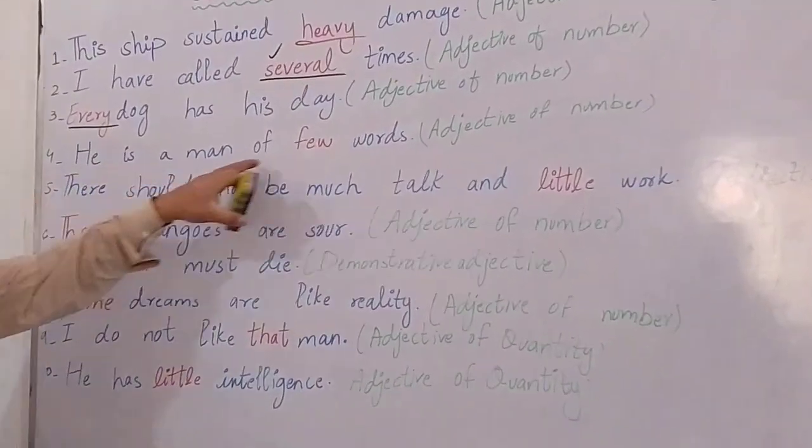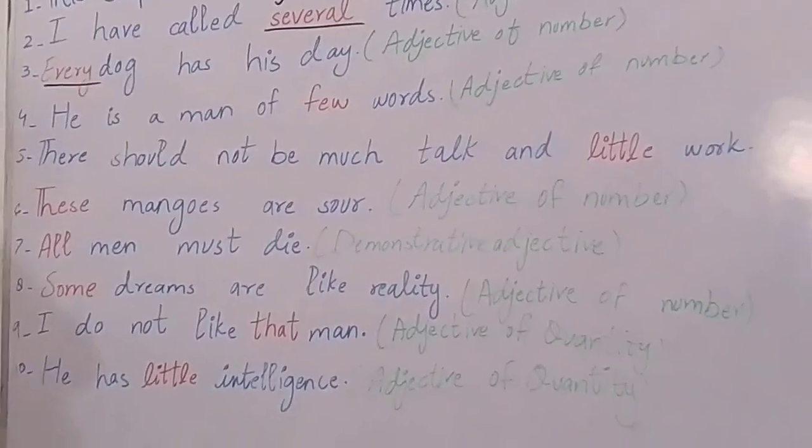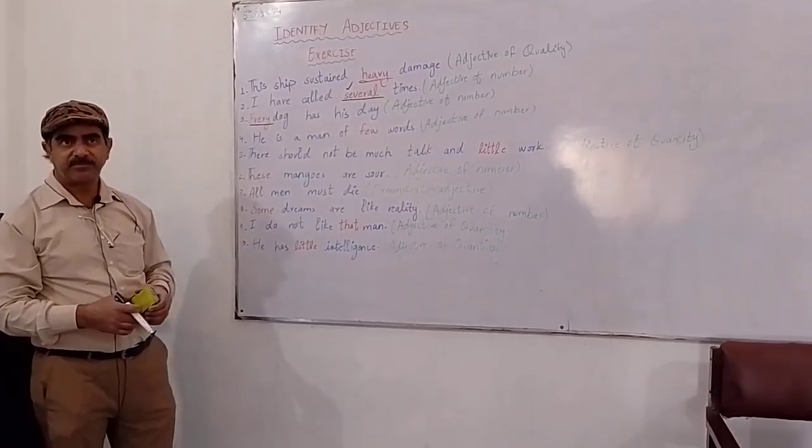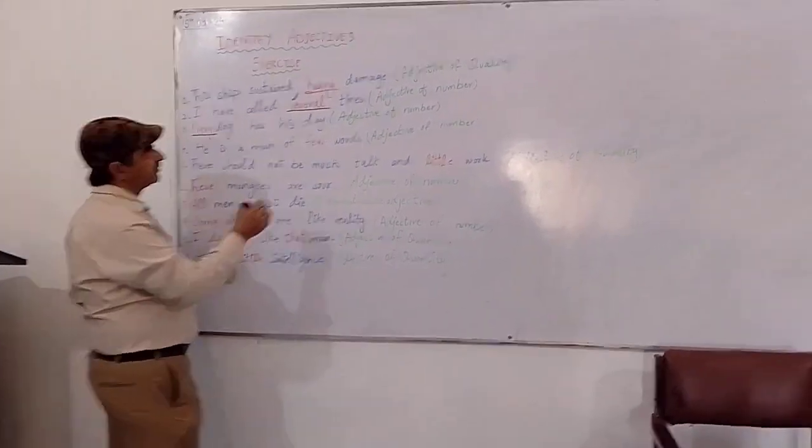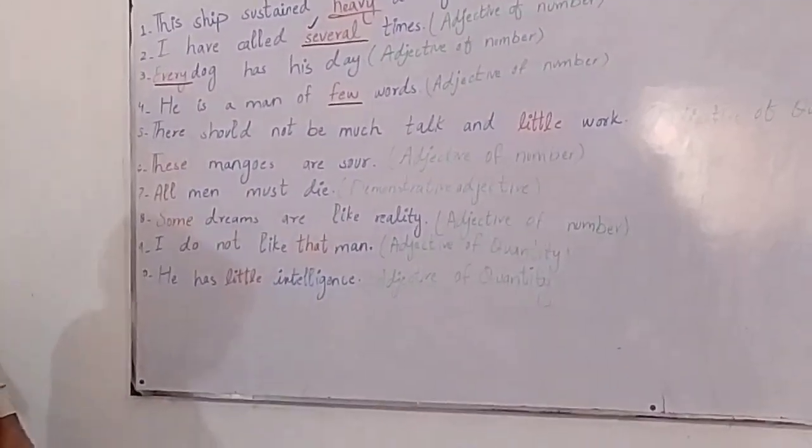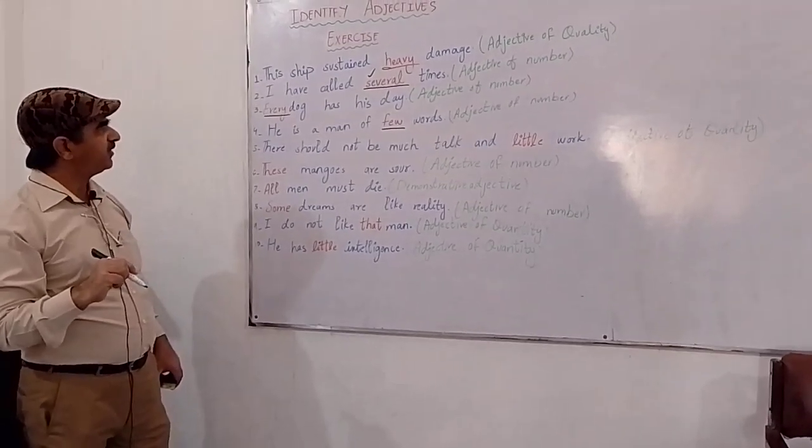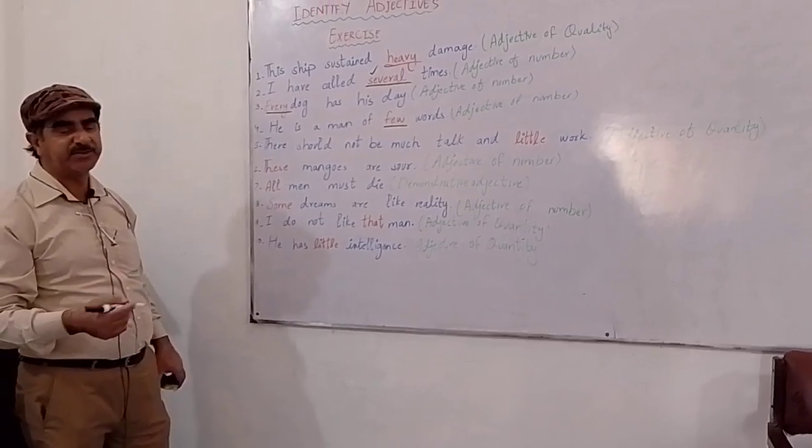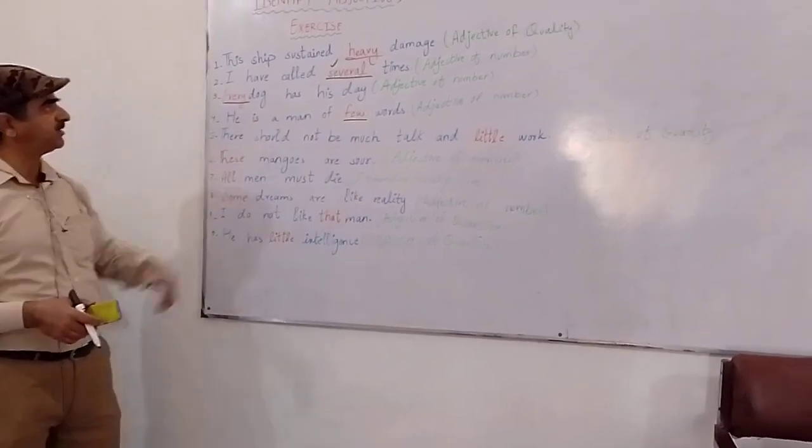Ok, he is a man of few words. He is a man of few words. Somebody else please. Amount of words in this sentence, few describe the amount of words. It's few is also telling us the number. Amount of words, number of words, yes. Amount is something else, that is quantity that comes with the quantity. So again it is telling us the number of words, it is the adjective of number.